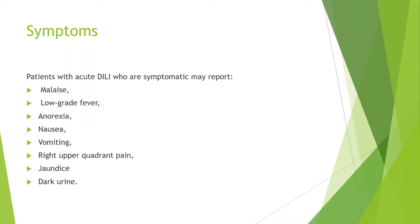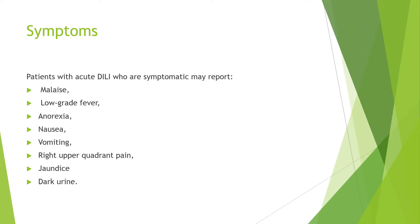The symptoms that you should be looking out for in patients experiencing acute drug-induced liver injury include malaise or discomfort, low-grade fever, anorexia which is linked to malnutrition, nausea, vomiting, right upper quadrant pain — which is exactly where the liver is — jaundice, yellowing of the skin or eyes, and extremely dark urine.